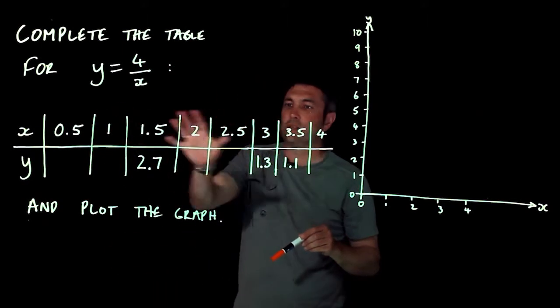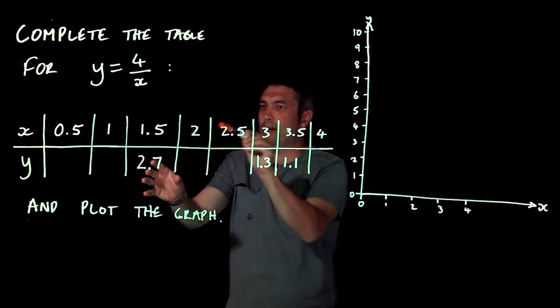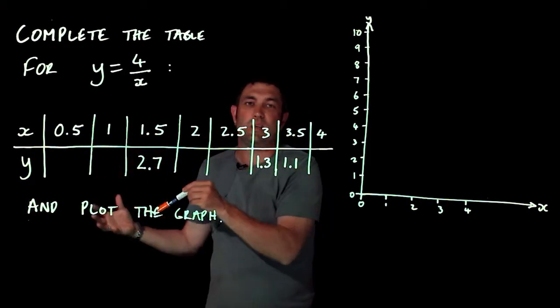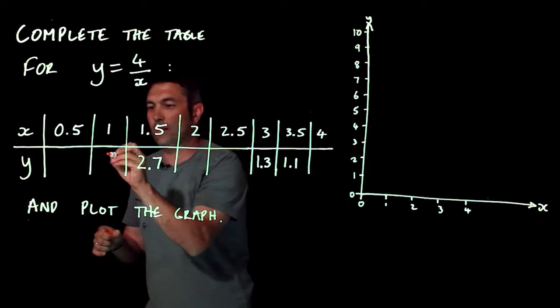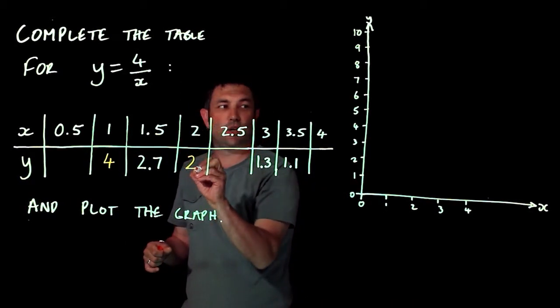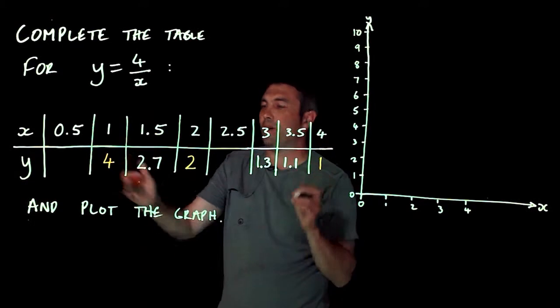There are some nasty ones that they've given us, but I'm going to do what I usually do and look at the easy ones first. So 4 divided by 1, I know straight away, is 4. 4 divided by 2 is another easy one, is 2. 4 divided by 4 is 1, and that's the easy ones out of the way.